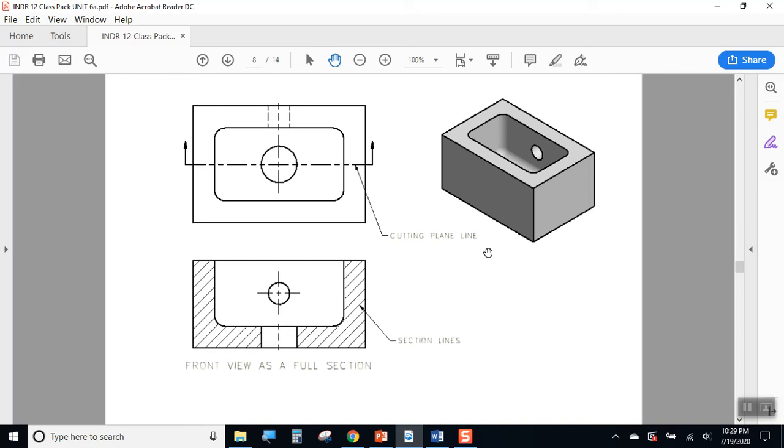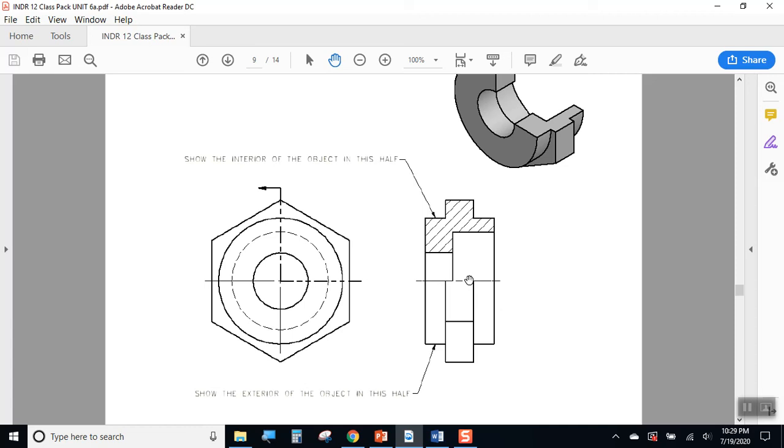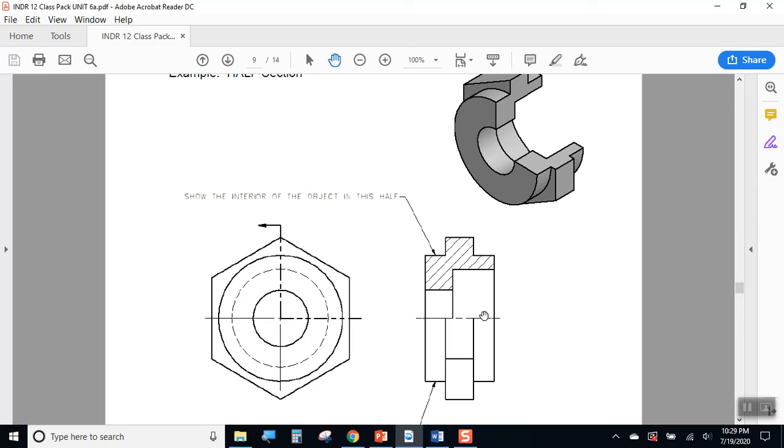The half section was the second kind of section we did. And half sections have a lot of uses on symmetrical parts that have some cylindricity.